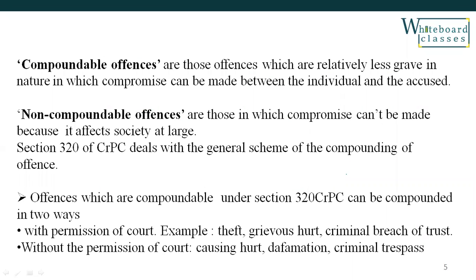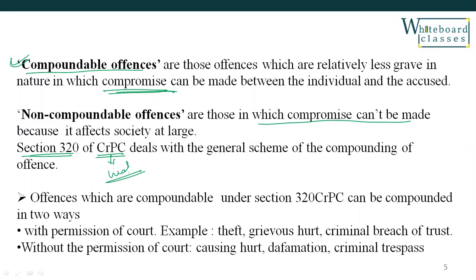Next is Compoundable Offences and Non-Compoundable Offences. Compoundable offences are those offences where the accused and complainant can reach a compromise. Non-compoundable offences are those which cannot be compromised. Section 320 of CRPC lists which offences are compoundable and which are non-compoundable. Compoundable offences are generally those of a private nature.